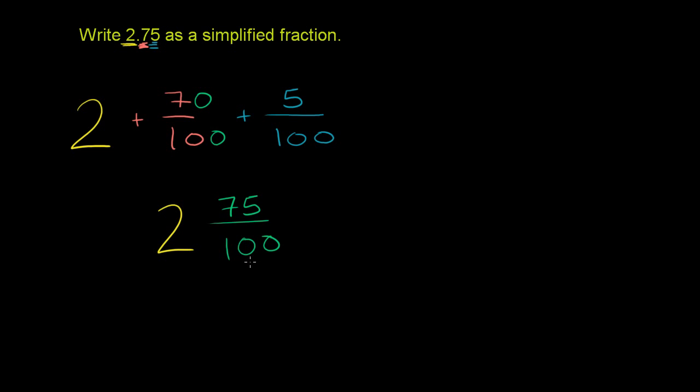We aren't in a completely simplified fraction yet because 75 and 100 have common factors. The largest number that goes into both, if you're familiar with quarters, is 25. Three quarters is 75 cents, four quarters is 100 cents, or four quarters is a dollar. So let's divide both of them by 25.